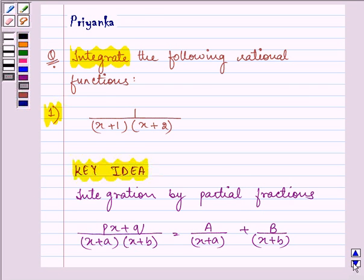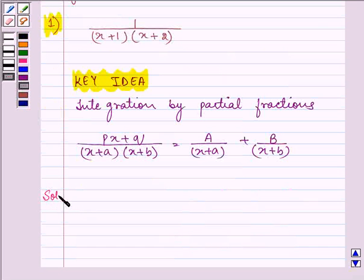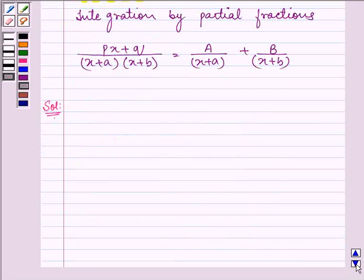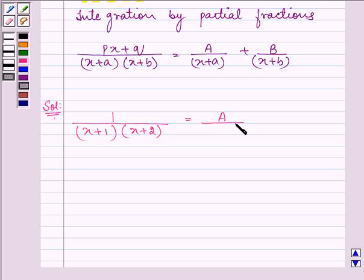Proceeding on with the solution. Now here in this question we are given the rational function as 1 over x plus 1 into x plus 2, and we will take it equal to A upon x plus 1 plus B upon x plus 2. Now taking LCM...